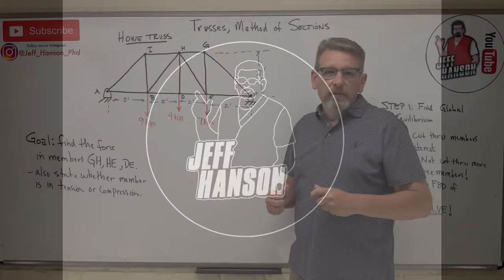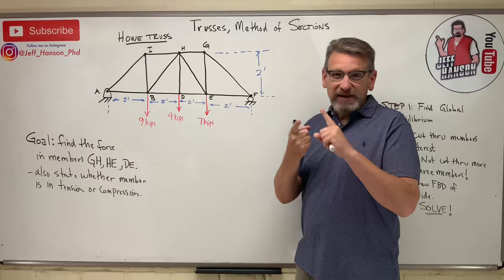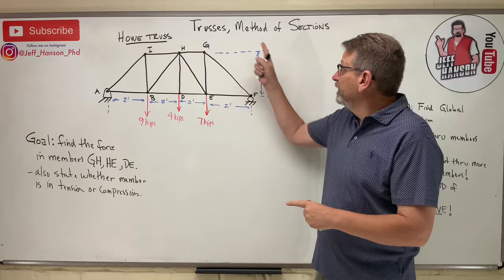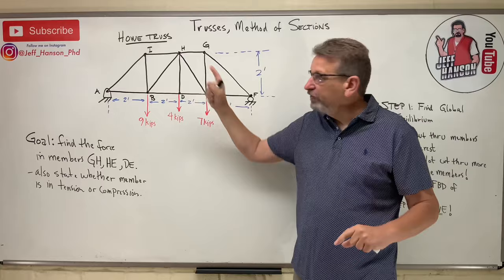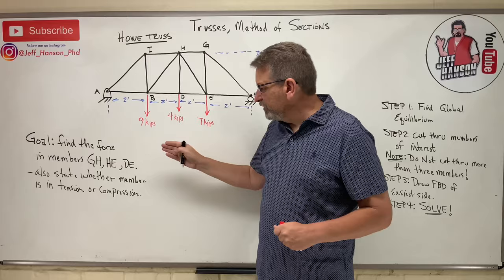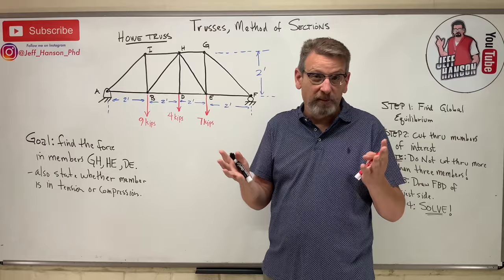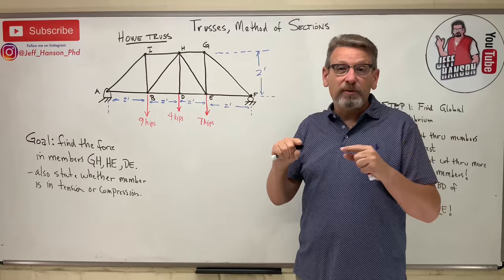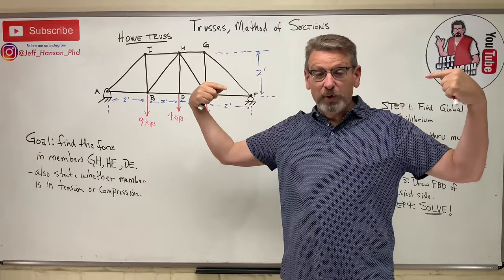Hey friends, welcome back. We're here today talking about trusses. We talked last time about the method of joints, and today we're talking about the method of sections. I have a truss for you here, this is called a Howe truss. They want us to find the force in members G-H, H-E, and D-E, and also state whether those members are in tension or in compression. When we do truss problems, that's a new thing for us. Remember, tension members are always pulling on the joint, and compression members are always pushing on the joint.